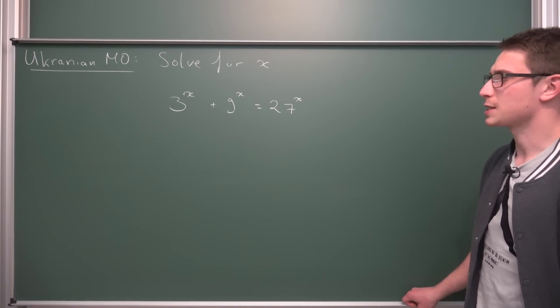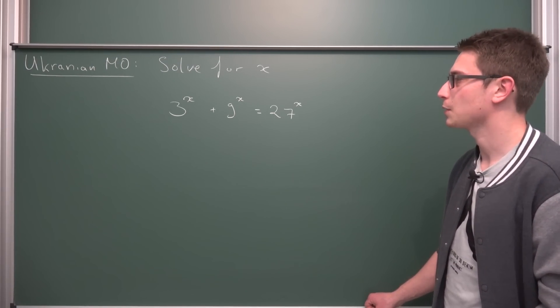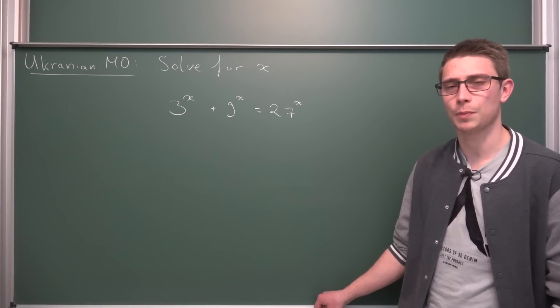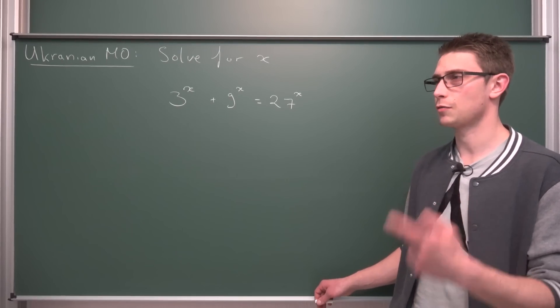Now, how would you start with something like this? Well, there's an obvious hint here, namely 3, 9, 27. They are all powers of 3, obviously. So what is 9 exactly? 9 is 3 squared.